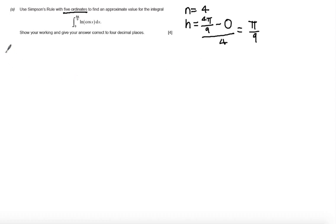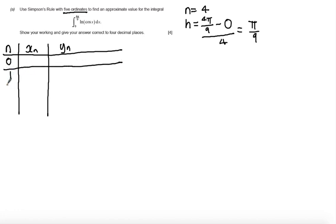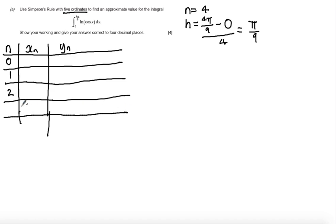Next I'm going to construct a table with columns for n, xn, and yn. For five ordinates, we start at n = 0 and go up to 4. The x values are: 0, π/9, 2π/9, 3π/9, and 4π/9.